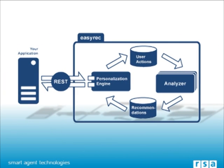First, let's have a short overview of how EZREC works. On the left-hand side, you can see a web server running your application. Once properly integrated, your application sends information about user actions to EZREC using modern, standard web technologies like REST or JavaScript. The EZREC personalization engine accepts the provided information and stores it in a database. In periodic intervals, analyzers are executed by EZREC to generate and store recommendations for your web portal. Using standard web technologies, your application can retrieve those recommendations from EZREC and display them to an end-user.